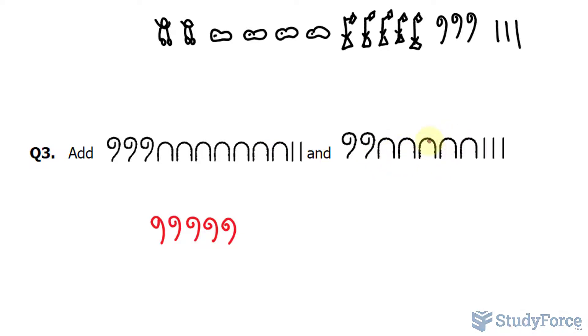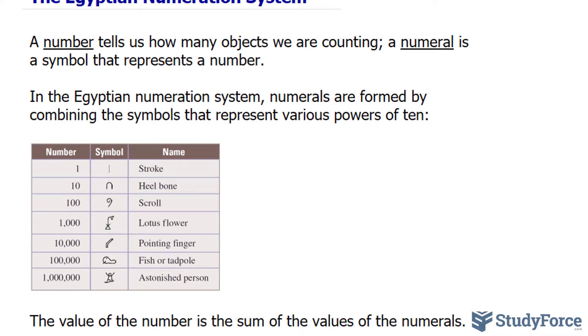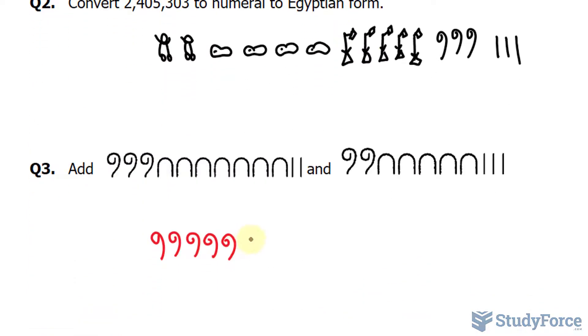12 heel bones. Now, since 12 exceeds 10 by 2, rather than writing out 12 heel bones, I'll write down one scroll, so I'll add another scroll, and two heel bones. So this represents 120, where that individually represents 100, and these two represent tens. Adding up the strokes, we have 5 of those, and that makes up 5.